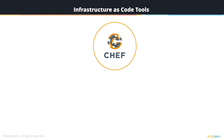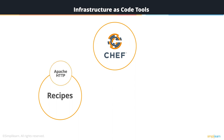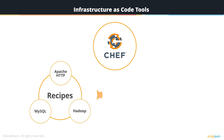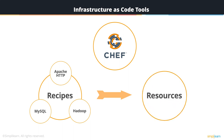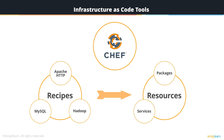Chef is both the name of a company and a configuration management tool. The user writes recipes that describe how server applications and utilities — such as Apache HTTP Server, MySQL, and even Hadoop — are to be configured. These recipes describe a series of resources that should be in a particular state: packages that should be installed, services that should be running, or any files that should be written.